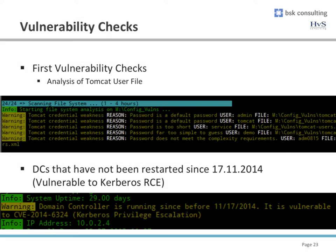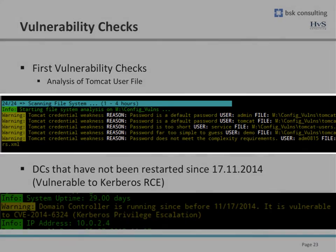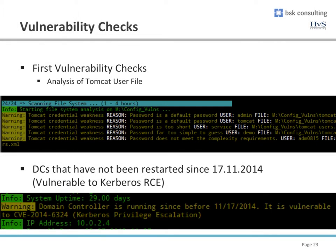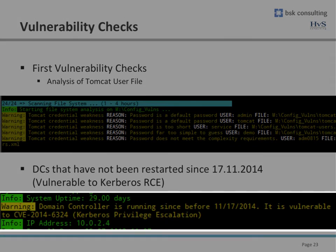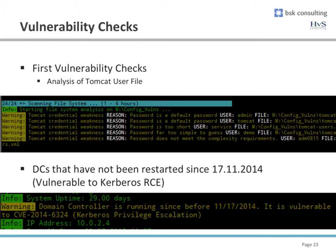These are two examples of vulnerability checks. The upper example shows the Tomcat user file analysis reporting weak user account credentials. The lower example shows a Kerberos vulnerability detected by evaluating the system uptime compared to the publication date of a critical patch.